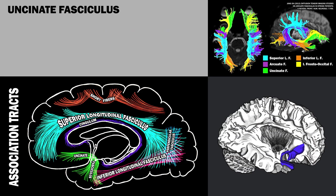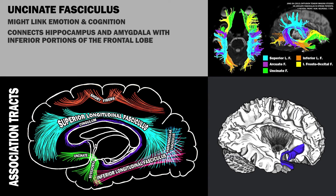The uncinate fasciculus' function is unknown, though it might link emotion and cognition, and it might be involved in the semantic processing of language. In any case, it passes across the bottom of the lateral fissure to connect the hippocampus and amygdala in the temporal lobe with inferior portions of the frontal lobe. It is found inward of the insular cortex behind the external capsule and extends into the posterior part of the orbital gyrus.